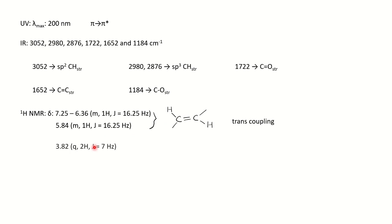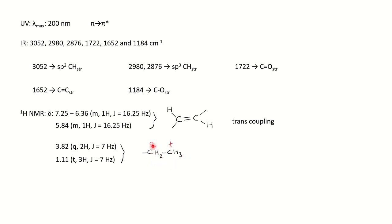Next, at 3.82 ppm there is a quartet for 2H with J = 7 Hz. A quartet means the CH2 proton has 3 neighboring H protons (n+1 = 3+1 = 4, quartet). The triplet at another shift is for 3H because of 2 neighboring protons (2+1 = 3, triplet). Both peaks have the same coupling constant of 7 Hz, confirming they are coupling with each other. This gives us a –CH2–CH3 (ethyl) unit in the molecule, also supported by the sp3 C-H stretching seen in IR.